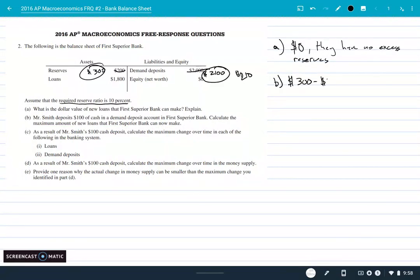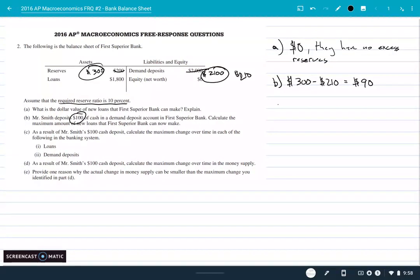So it looks to me like they can lend 300 minus - look at all this work that I'm showing - they could lend now 90 dollars, which makes sense. They could lend ten percent of that hundred dollars that he deposited.